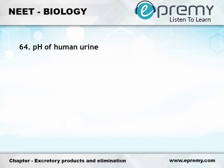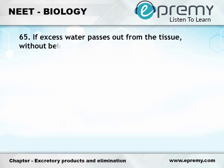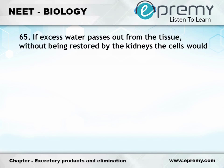Question number 64: pH of human urine is — Option A: 9, Option B: 6, Option C: 4, Option D: 3. The answer is Option B: 6.